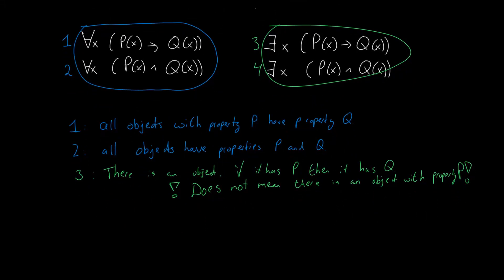Statement 4 says that there is a thing that has both properties P and Q. So yes, this one does imply that there is at least something with property P.